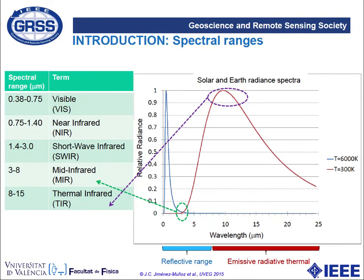This table shows a summary of the basic spectral regions used in optical remote sensing. In this tutorial we will focus on the thermal infrared region, approximately between 8 and 14 or 15 microns. There is also the emitting infrared region between 3 to 5 microns, in which thermal emission is added to solar reflection — also useful for surface temperature and emissivity — but we will focus only on the thermal infrared region here.